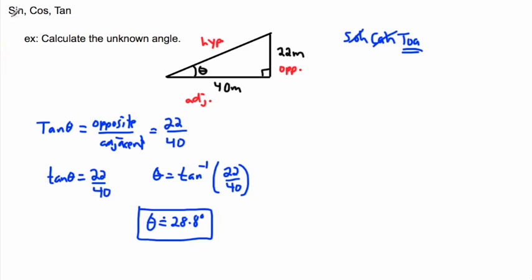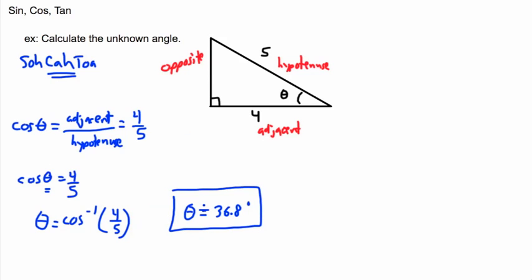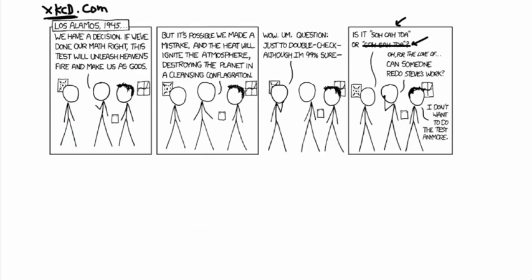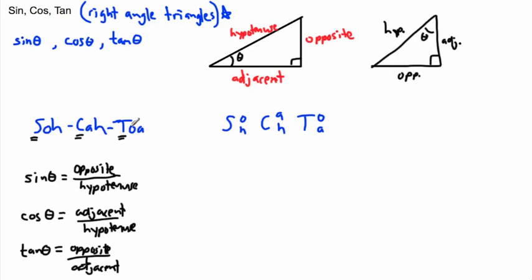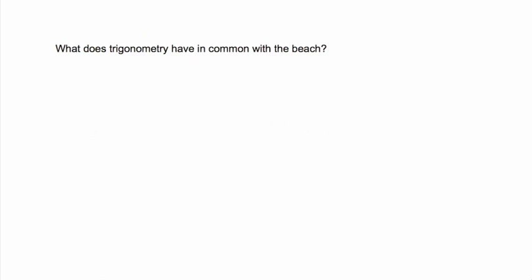We've just been looking at examples of how to use sine, cosine, and tangent to figure out unknown angles, and we can also do things with unknown sides. We've been using the trick called SOH CAH TOA to remember how sine, cosine, and tangent work. Now that brings up a really lame joke: what does trigonometry have in common with the beach? They both have tangents.